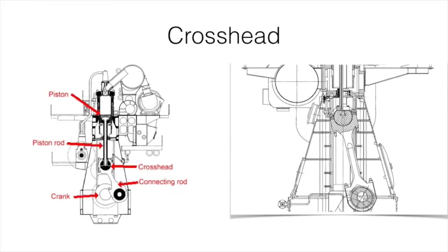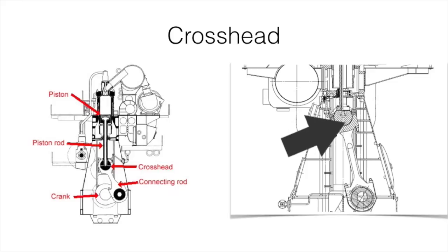Crossheads are found on large slow speed two-stroke engines. The crosshead joins the piston rod to the connecting rod. Its main purpose is to transfer the reciprocal motion of the piston to a rotary motion in the crankshaft. It also helps to eliminate sideways forces on the piston.